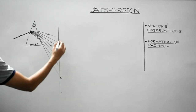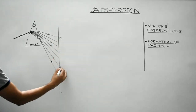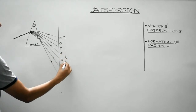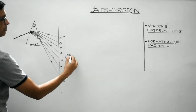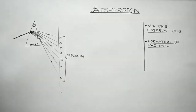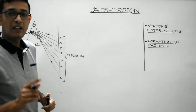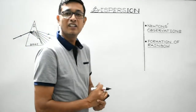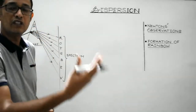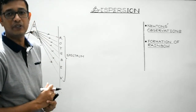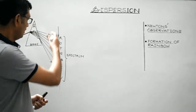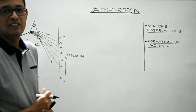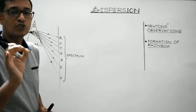Violet colour suffers maximum deviation while red colour suffers minimum deviation. This is known as the spectrum of white light, first obtained by Isaac Newton using a glass prism. He then tried to split the colours into further colours by placing an identical prism, but observed that the colours did not split into any further colours. So white light is composed of only 7 constituent colours.